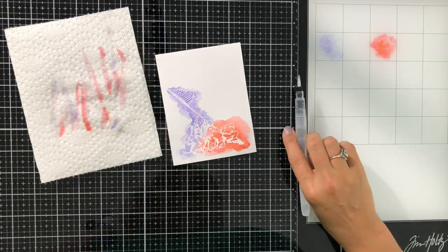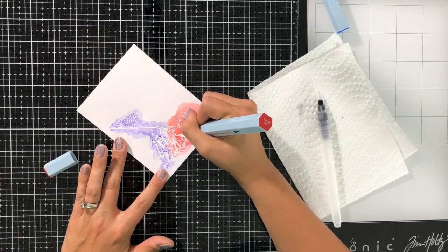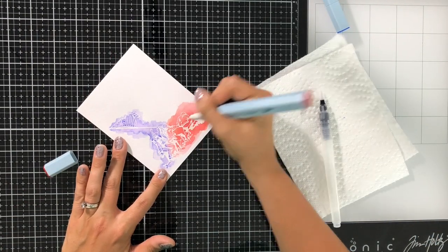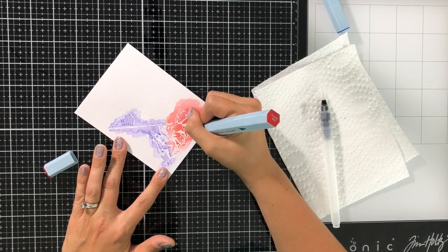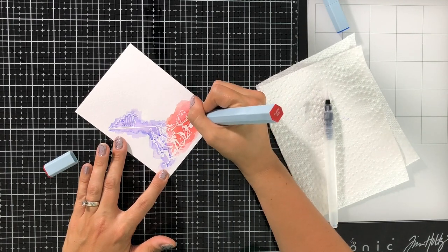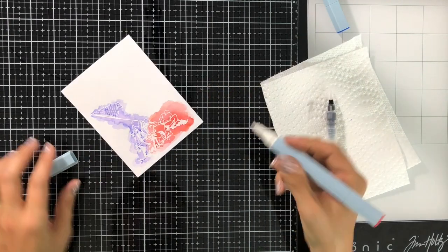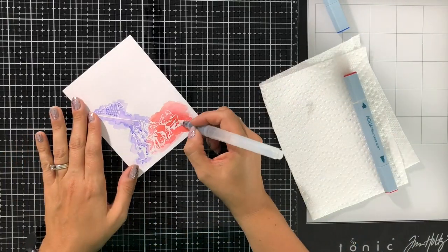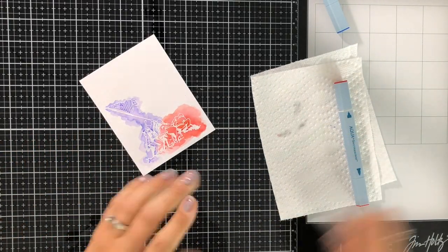I'm just going in and kind of blending it with the water brush. And then I added in a few little details using the marker. I just kind of wanted to darken in a few of the areas in both the red and the blue. And then I just kind of washed them out again with that water brush just to kind of blend it a little bit more.